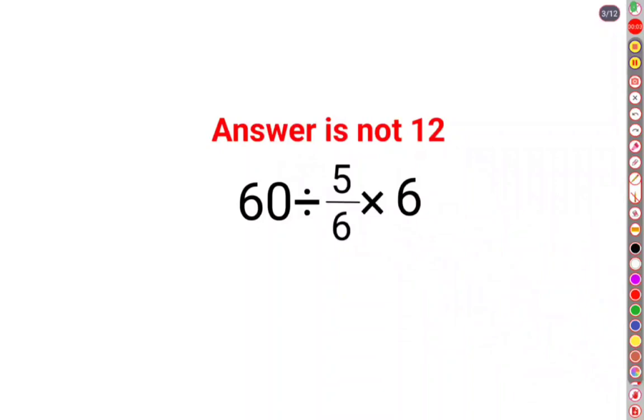Welcome everyone! A lot of people thought that the answer for this one is supposed to be 12 because they thought these terms get cancelled. So you are just left with 60 divided by 5, and the answer is supposed to be 12.